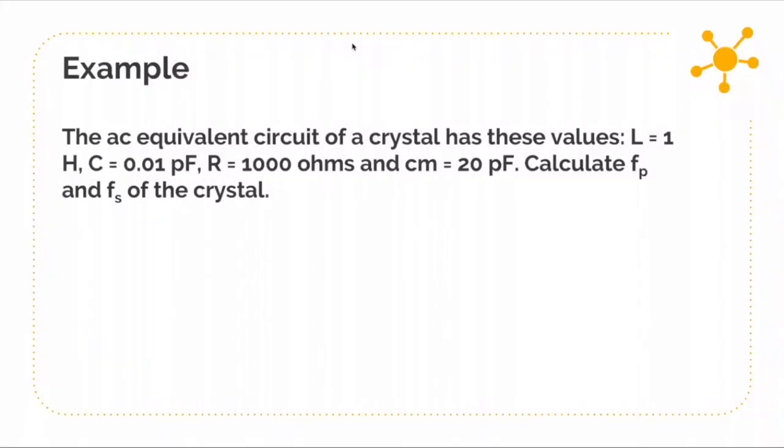Let's have some example. The AC equivalent circuit of a crystal has these values: L is 1 Henry, C is 0.01 picofarad, R is 1000 ohms, and the mounting capacitance is 20 picofarad.